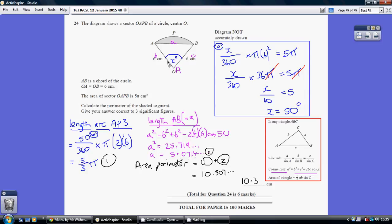Now the perimeter is this length, the straight length added to the curvy length, so 5.0714 added to 5 thirds π gives us 10.307 and that is 10.3 to 3 significant figures.